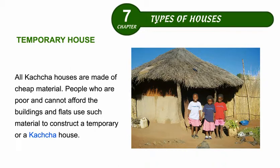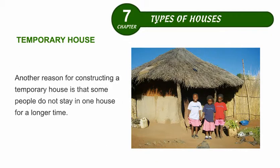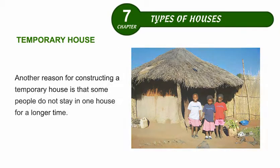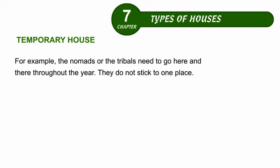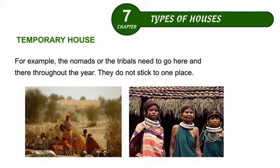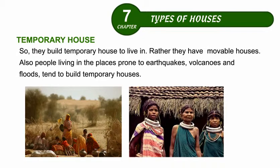People who are poor and cannot afford buildings and flats use such material to construct a temporary or Kaccha house. Another reason for constructing a temporary house is that some people do not stay in one place for a longer time. For example, the nomads or the tribals need to go here and there throughout the year. They do not stick to one place, so they build temporary houses to live in.